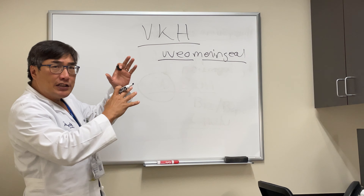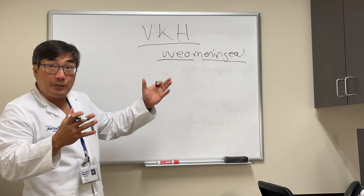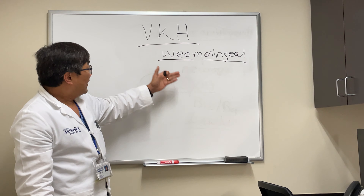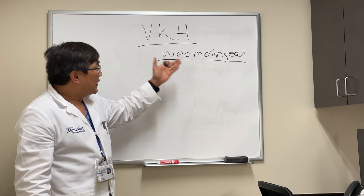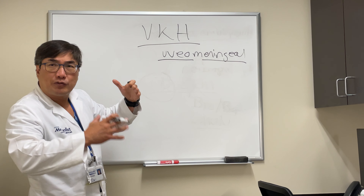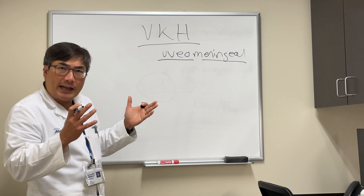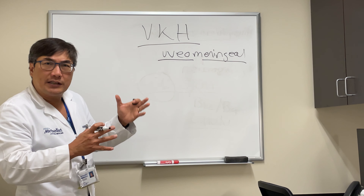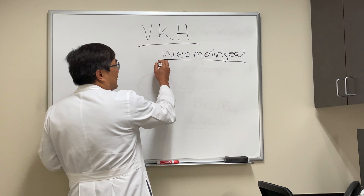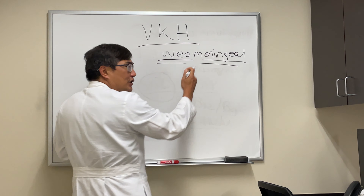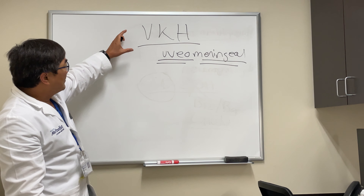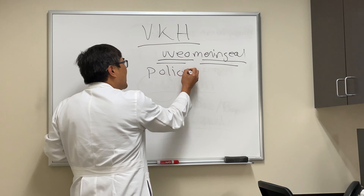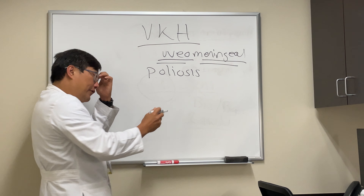The uveomeningeal symptoms are those you would expect from uveitis and meningitis: headache, cranial neuropathies, hearing loss, and for uveitis — red eye, inflammation in the anterior segment, synechiae — the usual things you would expect in uveitis. So the combination of uveitis and meningeal signs and symptoms should make you think about VKH when you have problems with the pigmented cells, and that's where the uvea comes in.